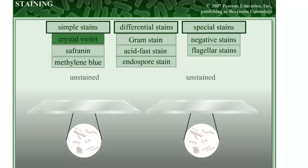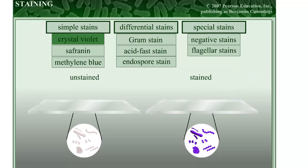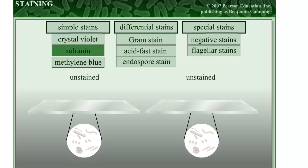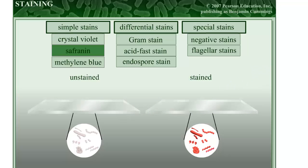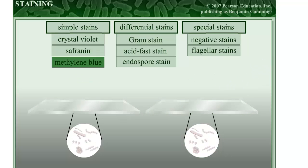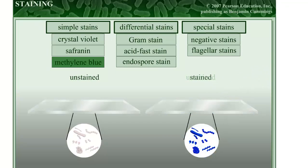Crystal violet is a purple stain that stains most bacteria uniformly. Safranin is a red dye that stains most bacteria pink or light red. Methylene blue is another basic dye that stains most bacteria a light blue color. Some of these dyes are also used in more complex staining techniques, such as differential stains.